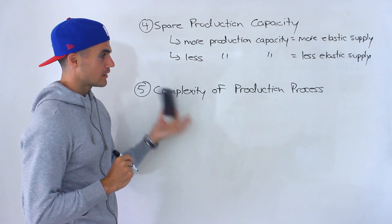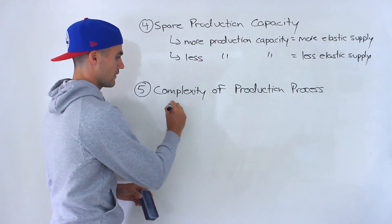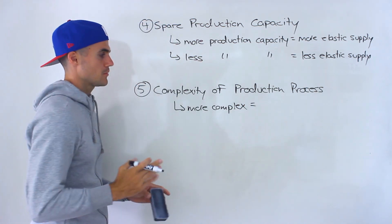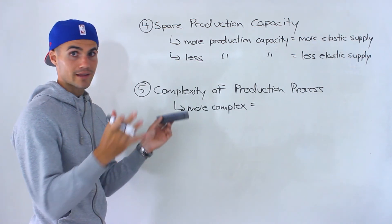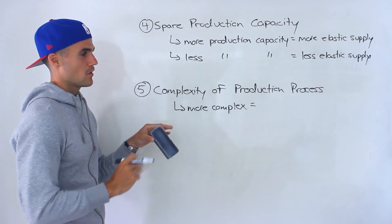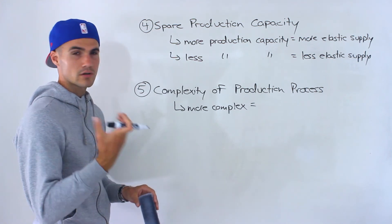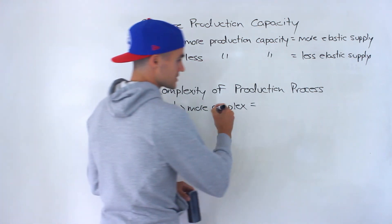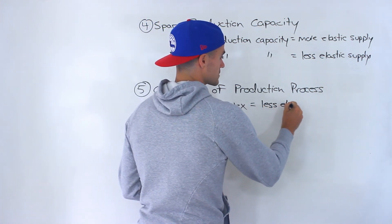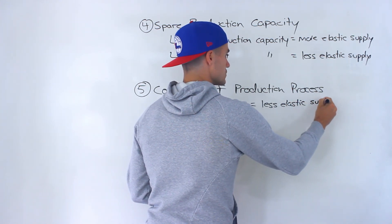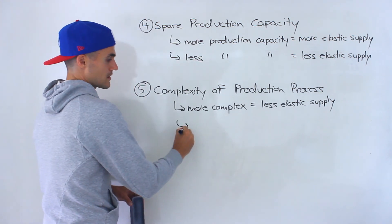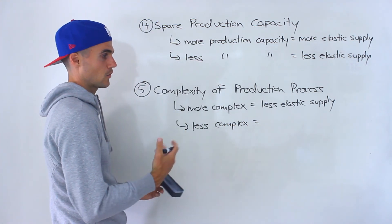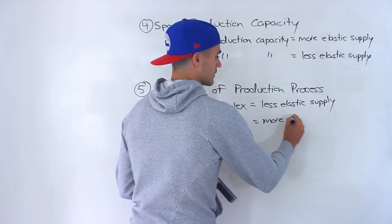Factor five is the complexity of the production process. Again, very intuitive. The more complex the process — for example, employees may require special training, or certain inputs are tough to find, which also relates to factor three — the less elastic the supply is going to be, since it's tougher for producers to adjust to a price change. The less complex the production process, the easier it is for a producer to adjust that quantity supplied, and so the more elastic the supply is going to be.